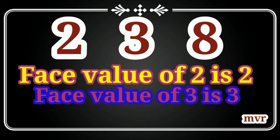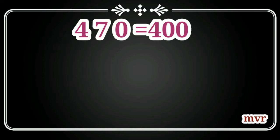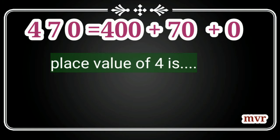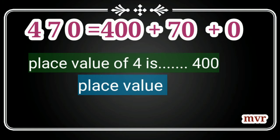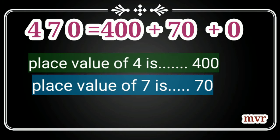The face value of a digit is the digit itself. So the face value of two is two, face value of three is three, and face value of eight is eight. Here is another example: 470.